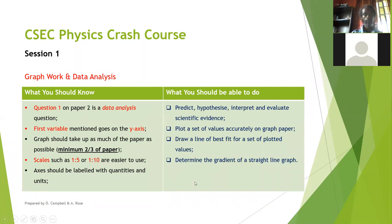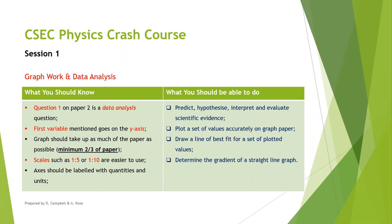The first question on the paper is always a data analysis question, which means you will be required to draw a graph. You have to plot a graph from tabulated information they give you, calculate the gradient, and make other interpretations. CXC's stipulation is that for graph work and data analysis you should be able to predict, hypothesize, interpret, and evaluate scientific evidence — meaning if you get experimental data you should be able to use it along with the graph to make predictions.